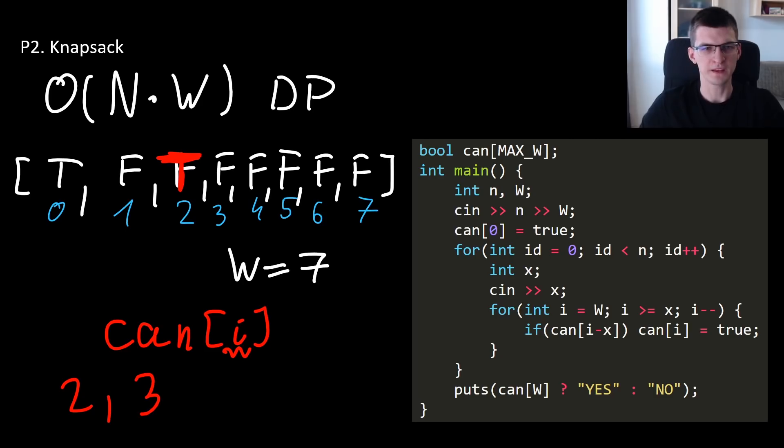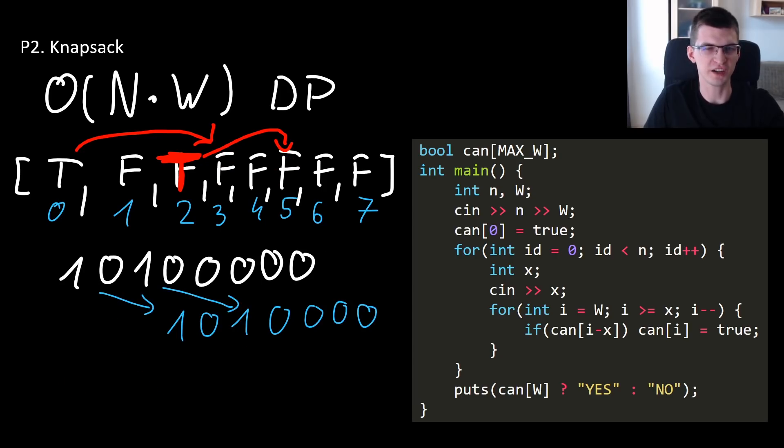Now if there is some value let's say 2, what we will do is we will say if there is a subset so far with sum i then now there is i plus 2. So if first value is 2 then because there is true here we will also mark this one as true. Let's say the second value is 3. Then because there is true here we will make a true there. And so the same here. So true and true and so on. At the end for every value from 0 to W we will know if there is a subset with exactly this sum. You can analyze the code on the right. It's crucial to think about this array can as a binary mask.